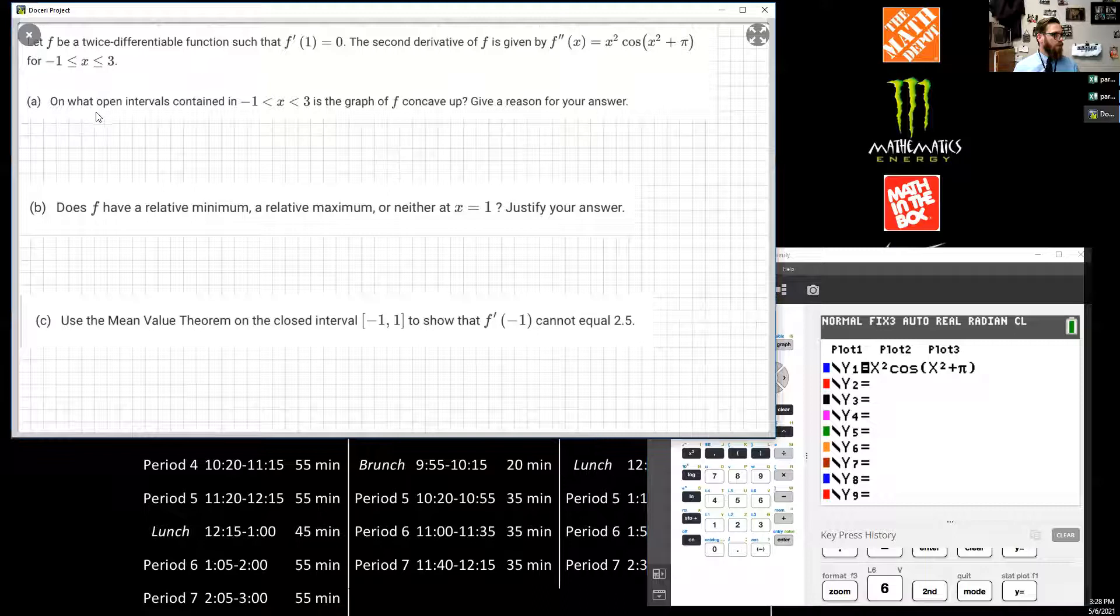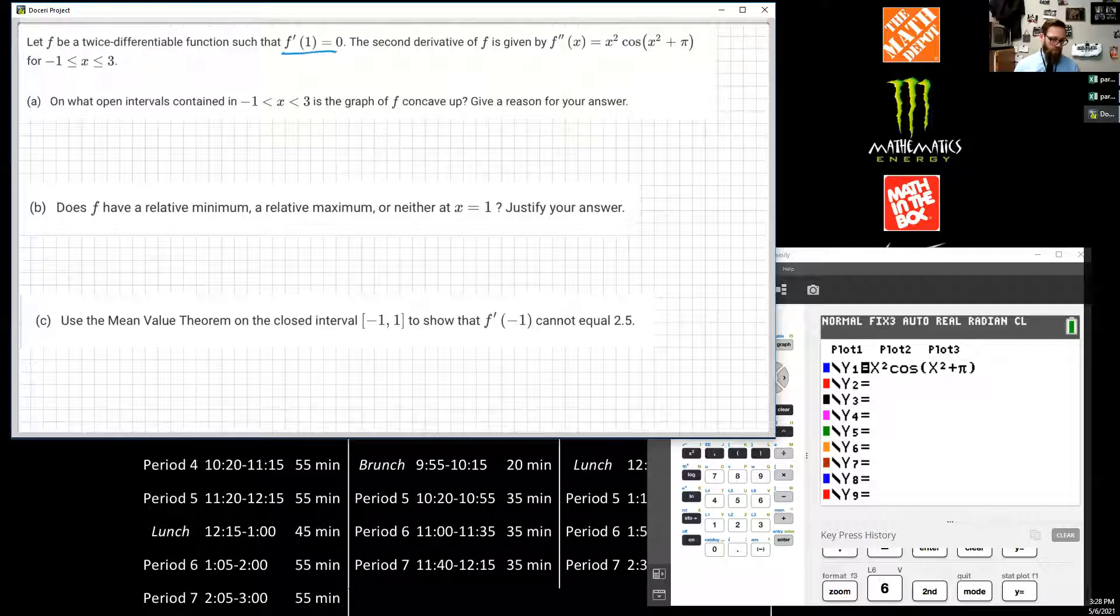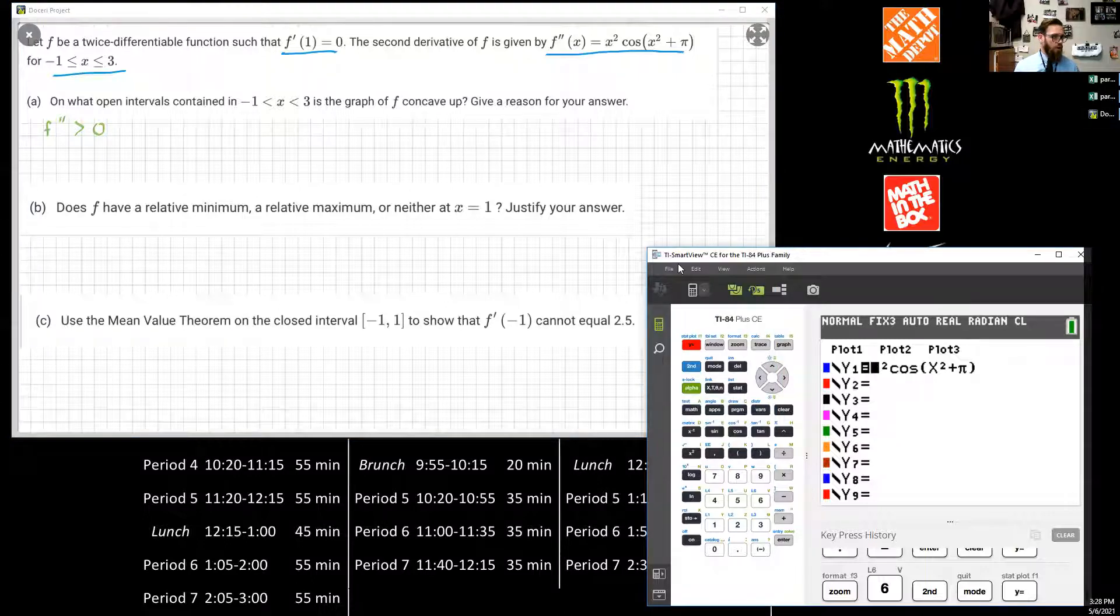The first question says, on what open intervals contained from -1 to 3, is the graph of F concave up? We know if a graph is concave up based on its double derivative. So we are given all this information up top. Now, let's look at what its double derivative is. If the double derivative is positive, then we know that we are concave up.